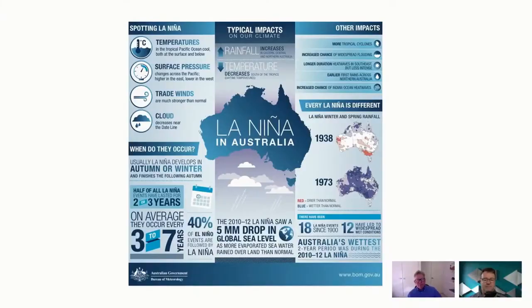Let's have a chat about what a La Niña is, and of course the flip side is El Niño. La Niña is translated from Spanish meaning the girl child, and El Niño means the boy child — they are the yin and yang, the opposites of each other. Most Australians have heard of El Niño because it means drought, bushfires, heatwaves, low rainfall, a weaker monsoon, and fewer cyclones. We probably get more El Niños than La Niñas — that's just how the Pacific Ocean works.